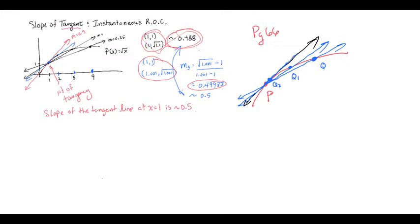Often an arrow is used to denote the word 'approaches,' so the statement can be written as: as Q approaches P, the slope of the secant PQ approaches the slope of the tangent at P. We're just using symbols rather than words — the slope of secant PQ approaches the slope of the tangent at point P.